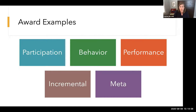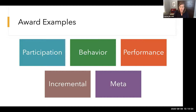A meta award would be badges for badges — awards for awards — representing complete competency areas for the course. Continuing the information literacy example: you might have multiple assessments requiring students to locate, evaluate, and synthesize information sources, and in D2L you could choose criteria from those assignments to give the student an information literacy meta award. This also gives you a quick look at how many students actually reach that level of competency across all those assignments.